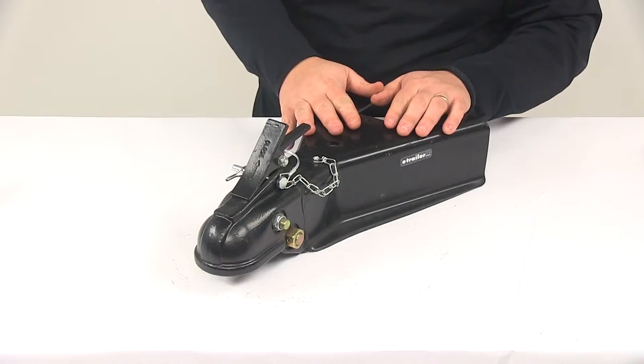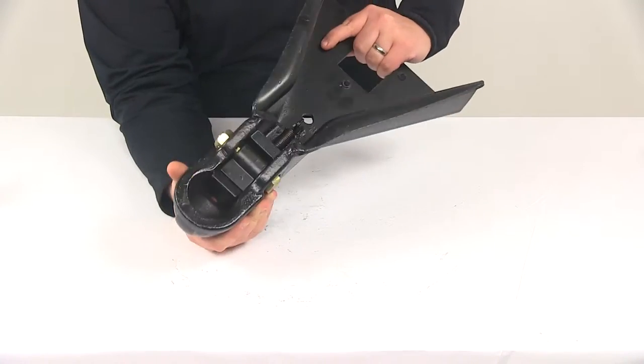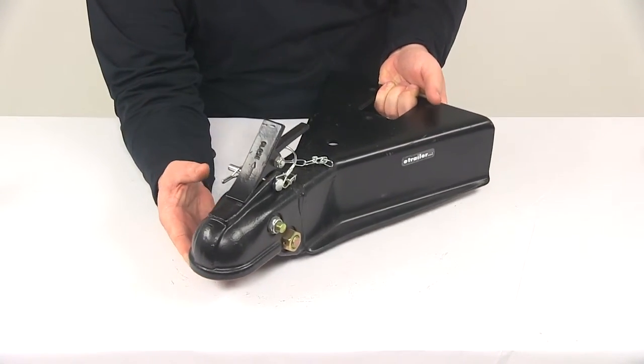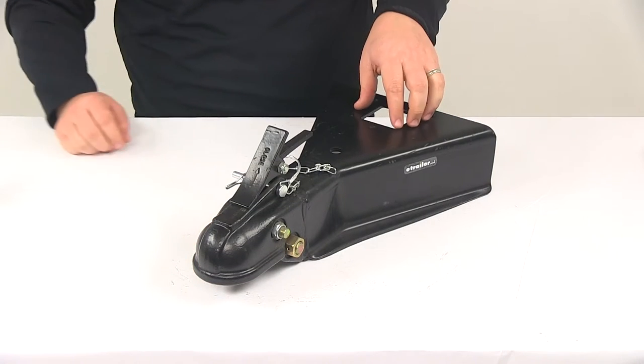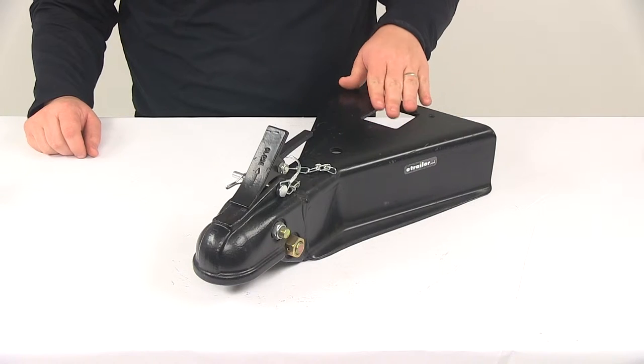Now the coupler itself is made from a steel construction. It's going to feature a really nice black powder coat finish on it so it's going to do a great job at resisting rusting and corrosion. It's going to have the built-in jack attachment point that's going to allow for quick and easy mounting of a square utility jack.